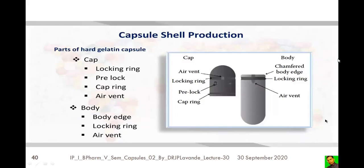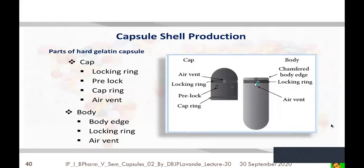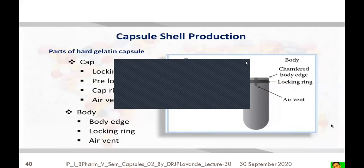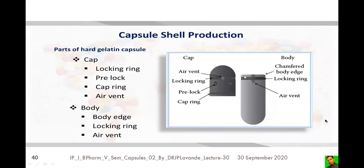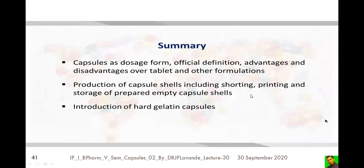The cap is the shorter piece with a slightly larger internal diameter, and the body is the longer piece with a slightly smaller diameter, so the cap fits properly over the body. The cap has parts including an air vent, locking ring, pre-lock, and cap ring, whereas the body has a body edge, locking ring, and air vent. This summarizes the capsule shell production topics covered so far.